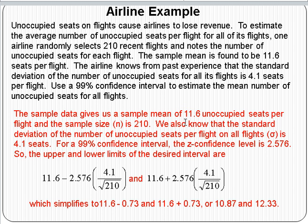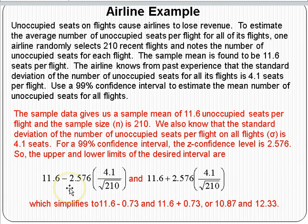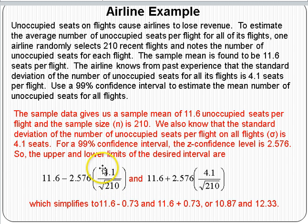The sample data gives us a sample mean of 11.6 and a sample size of 210. The standard deviation of unoccupied seats per flight on all flights is 4.1 — that's our sigma. For a 99% confidence interval, we want to go up and down 2.576 standard deviations from the mean. So up and down that many standard deviations from the sample mean will have a 99% chance of capturing the population mean. Plugging into the confidence interval formula, we start at the sample mean, go down 2.576 standard deviations of the sample mean — which is sigma divided by the square root of n, called the standard error — and go up 2.576. Remember, 2.576 is linked to the 99% confidence level.